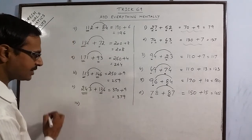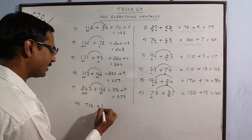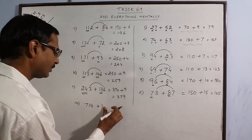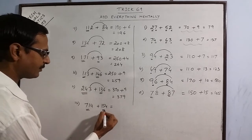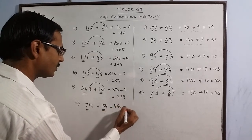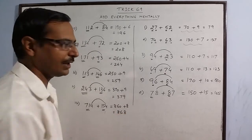See, larger examples. 714 plus 154. 71 plus 15. 86. Put 1 0. 4 plus 4. 8. 868.